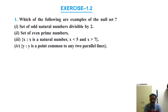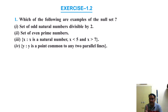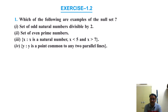The set of even prime numbers is not a null set, because the number 2 is even and prime. So this is a singleton set with one element: 2. Next, x such that x is a natural number, x < 5 and x > 7 — no natural number can be both less than 5 and greater than 7 simultaneously, so this is also an empty set.